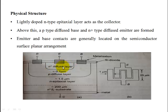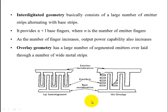The surface has ohmic contacts. The emitter and base contacts are generally located on the semiconductor surface in a planar arrangement. This structure applies to interdigitated, overlay, and matrix geometries.